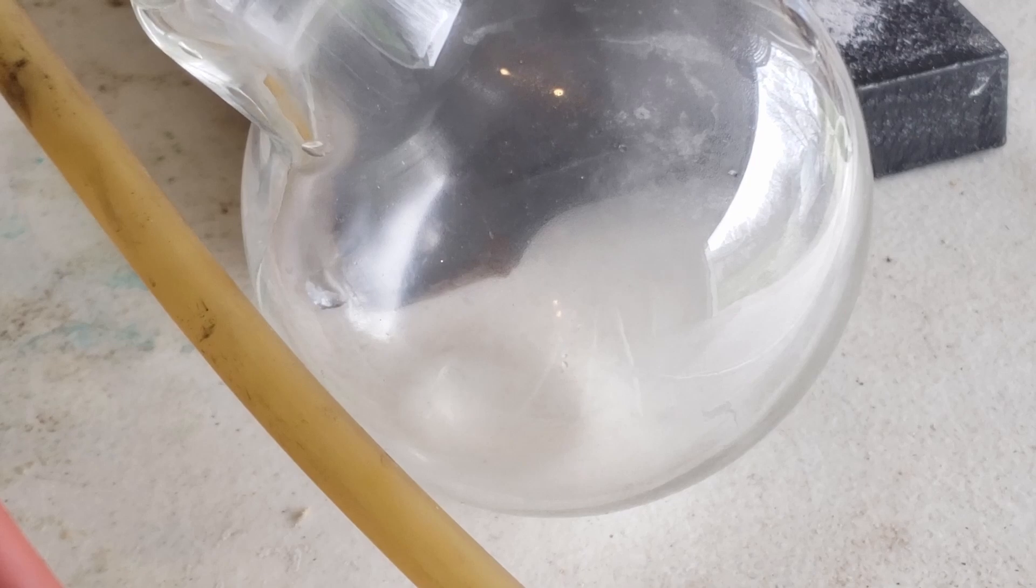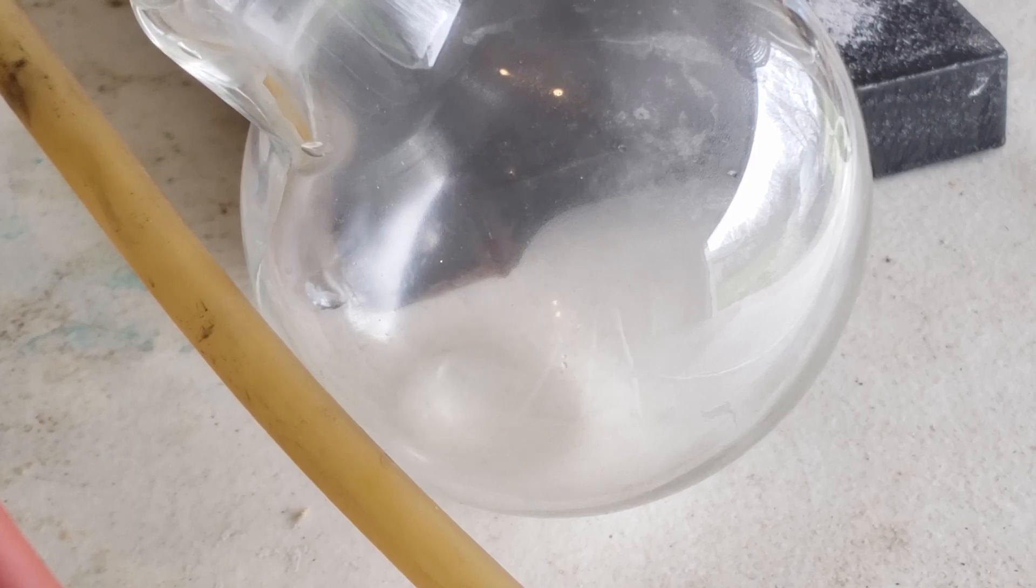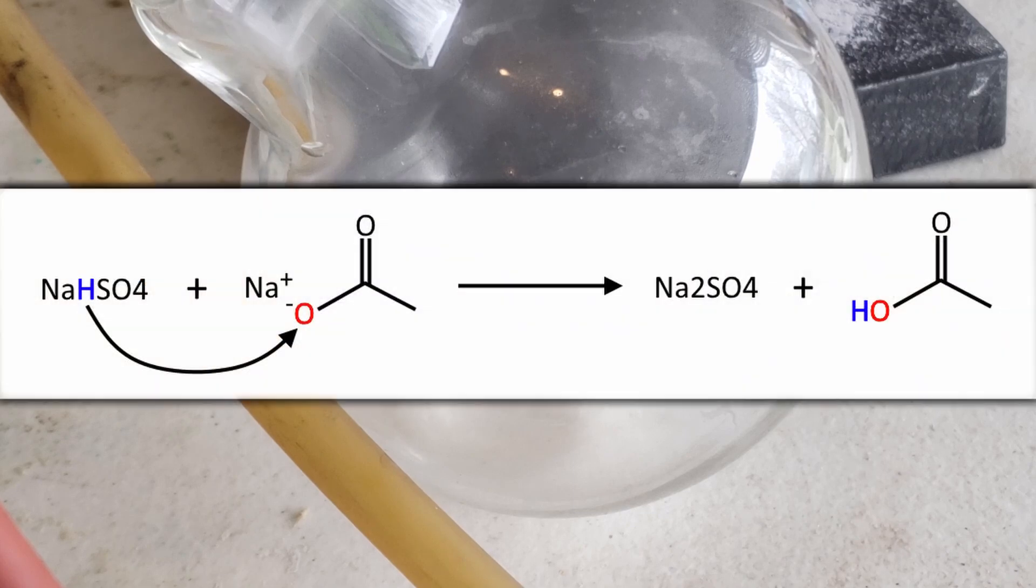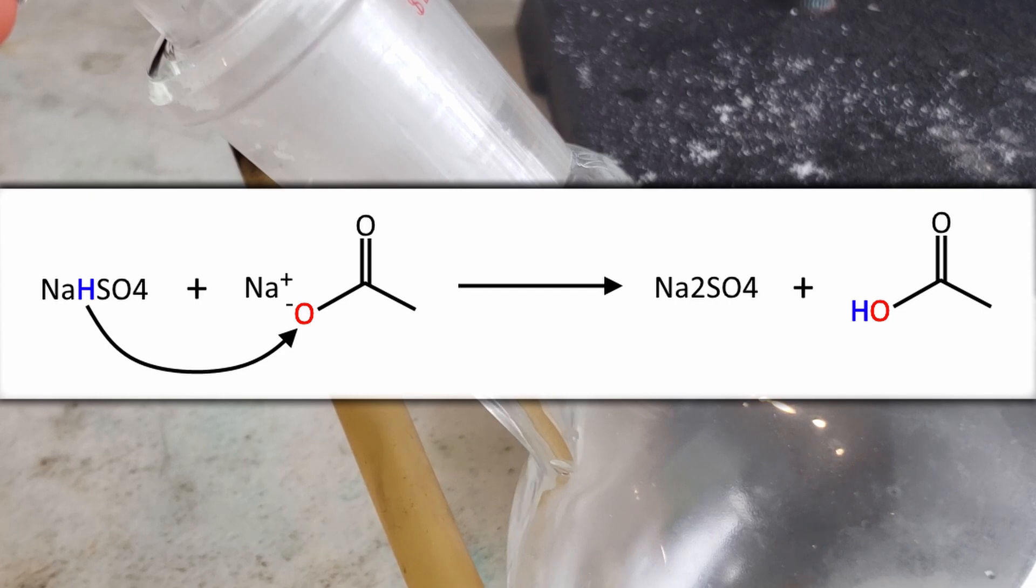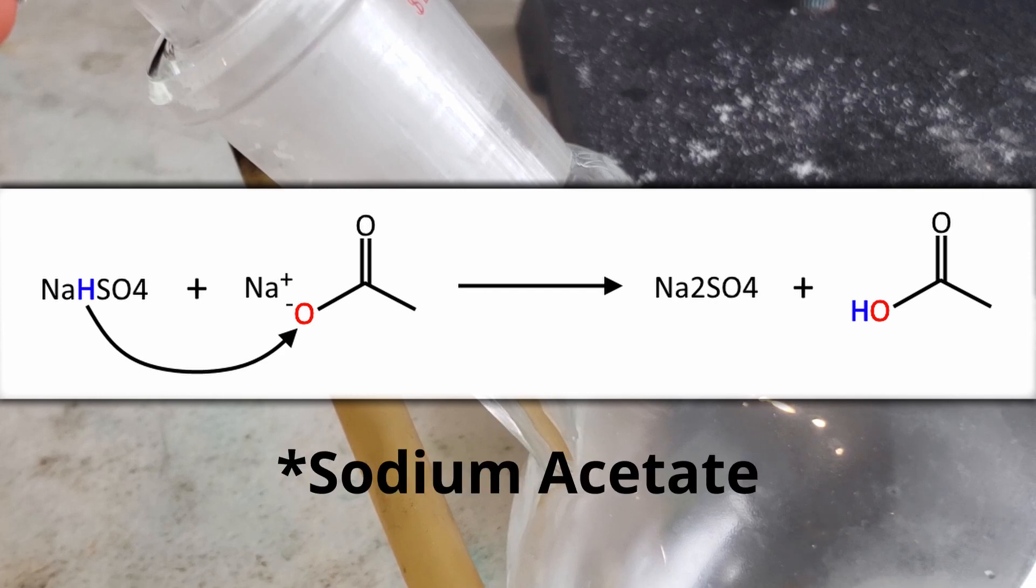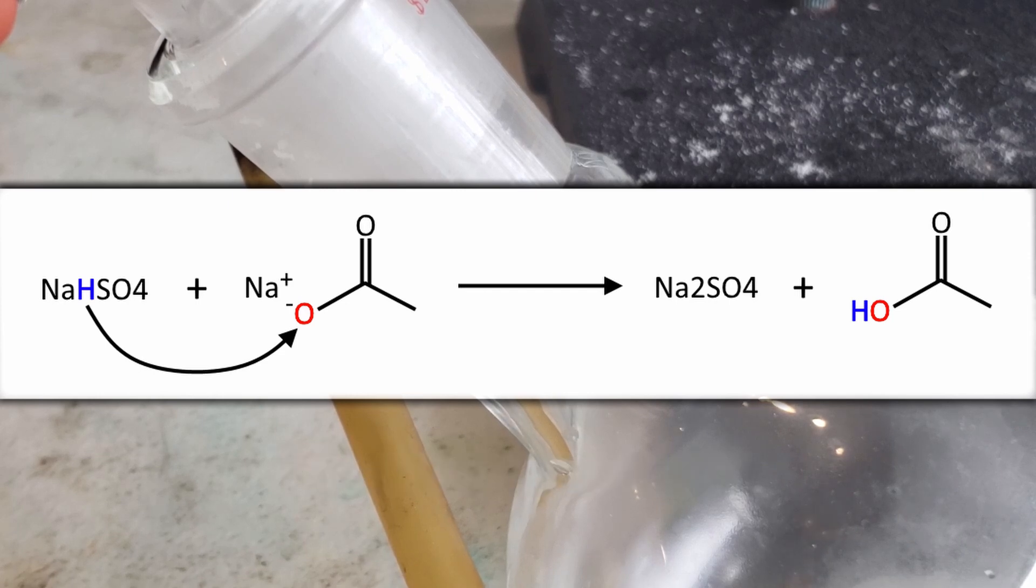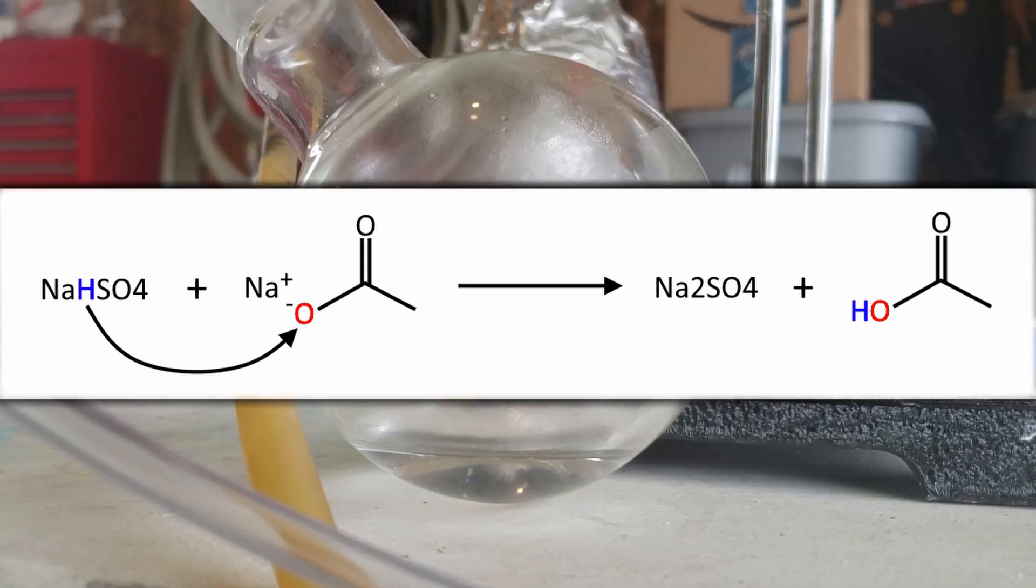After a few minutes, the first drops of distillate began to come over. What's happening here is the sodium bisulfate, being a stronger acid than acetic acid, protonates the sodium acetate, giving us acetic acid and leaving behind sodium sulfate as a byproduct.